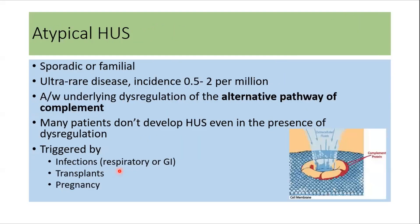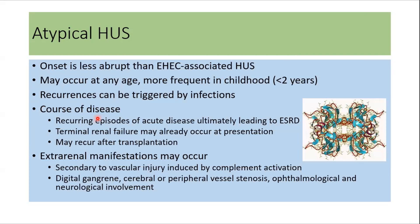Atypical HUS can be sporadic or familial. It is an ultra-rare disease with an incidence of around 0.5 to 2 per million, and it is associated with dysregulation of the alternate pathway of complement. Many patients, although they have mutations or dysregulation in the complement, don't develop HUS unless triggered by infection, transplants, or pregnancy. The onset of atypical HUS is less abrupt than EHEC-associated HUS. It can occur at any age but is more frequent in childhood. Recurrences can be triggered by infections and the course of the disease can vary between patients.